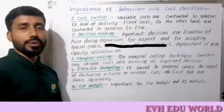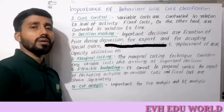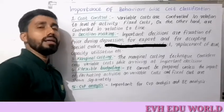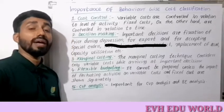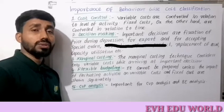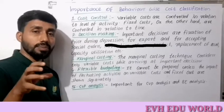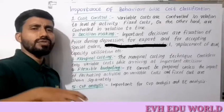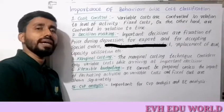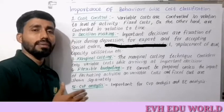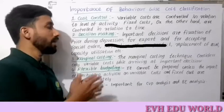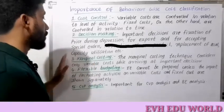Marginal costing and absorption costing are two techniques. In the case of marginal costing, only variable costs are charged to the product. Fixed costs are excluded. We can apply the distinction between fixed and variable costs to marginal costing.